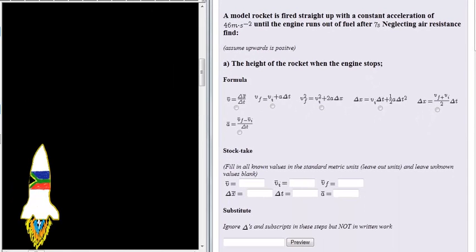Okay, so here we have a rocket that is fired straight up into the air and as it goes up into the air it has an engine that's blasting itself up at an acceleration of 46 meters per second squared. But that fuel doesn't last forever and so at some point the fuel runs out.